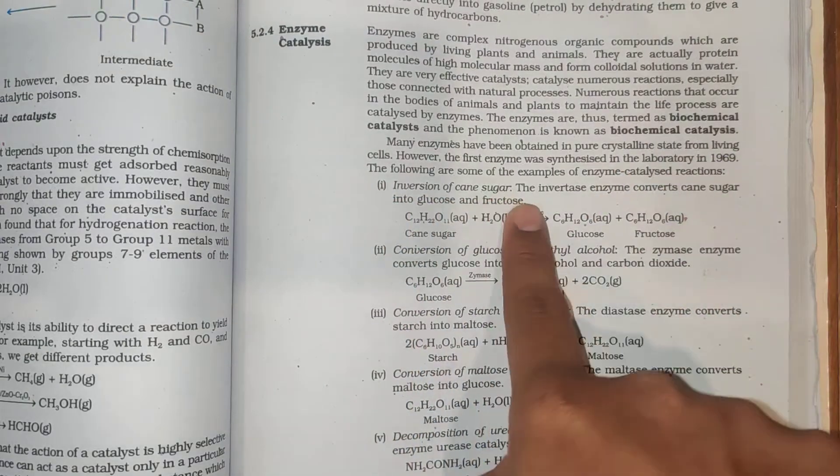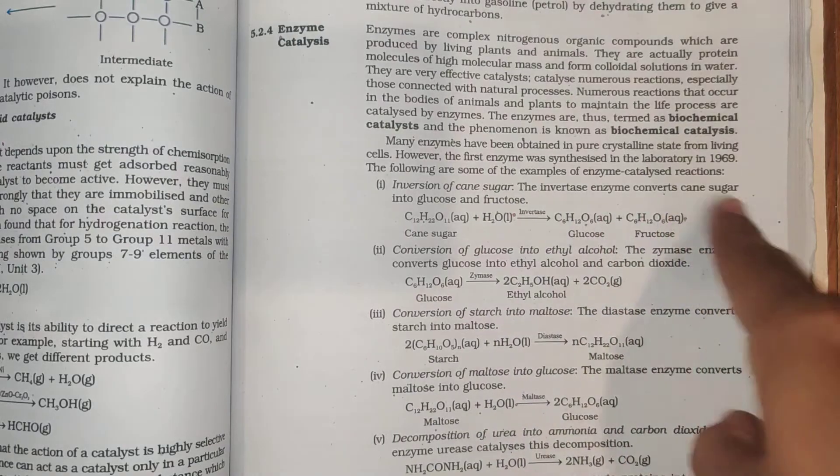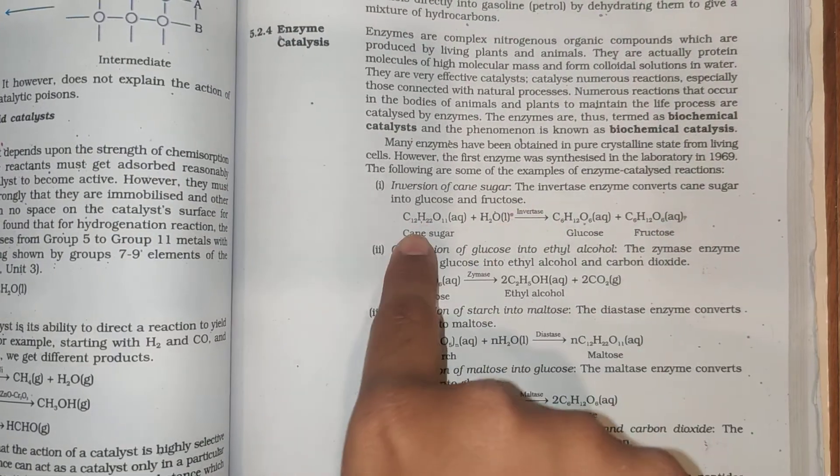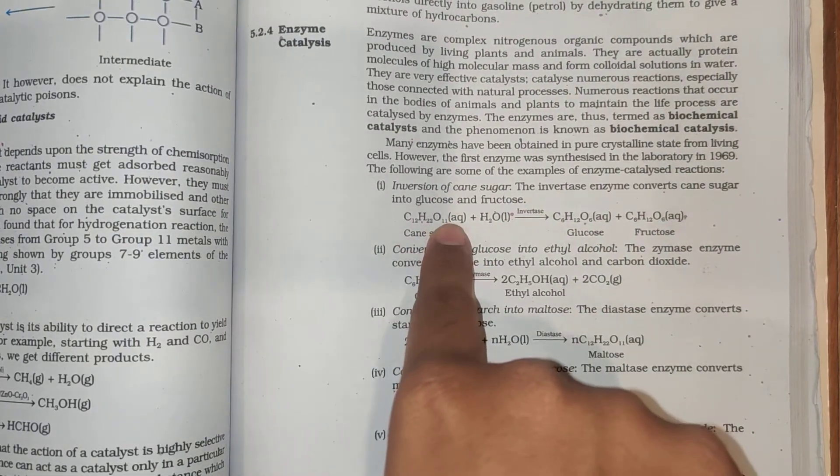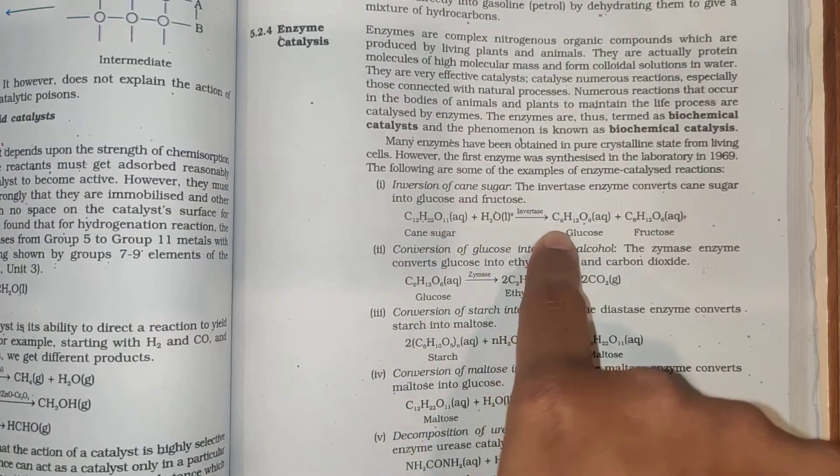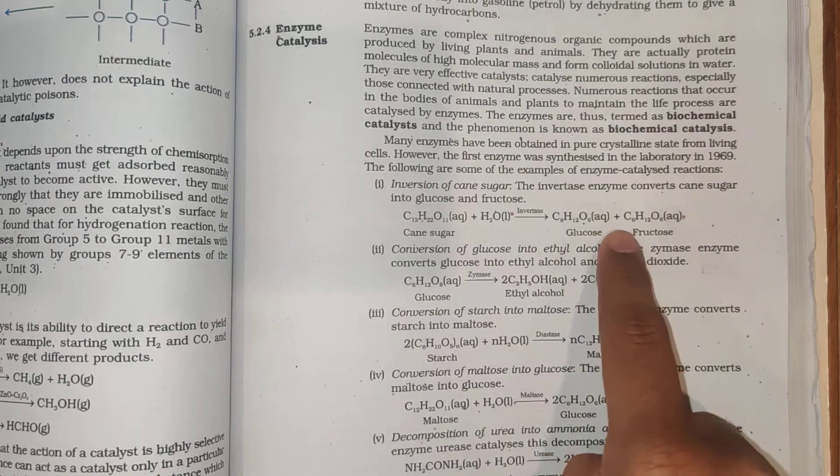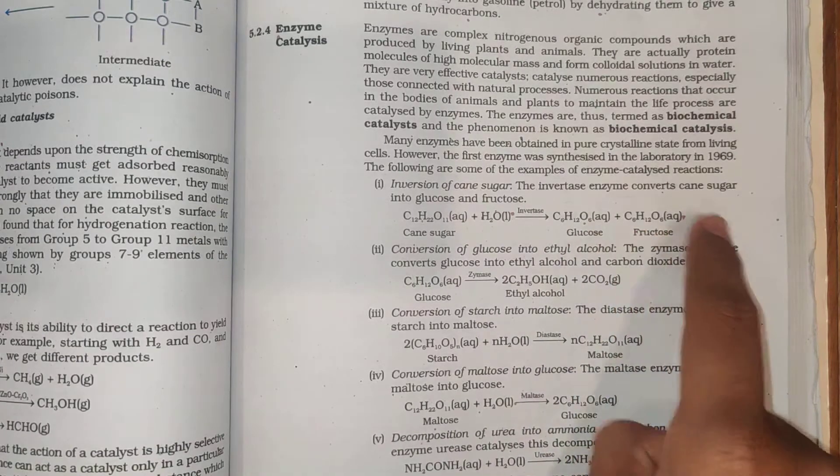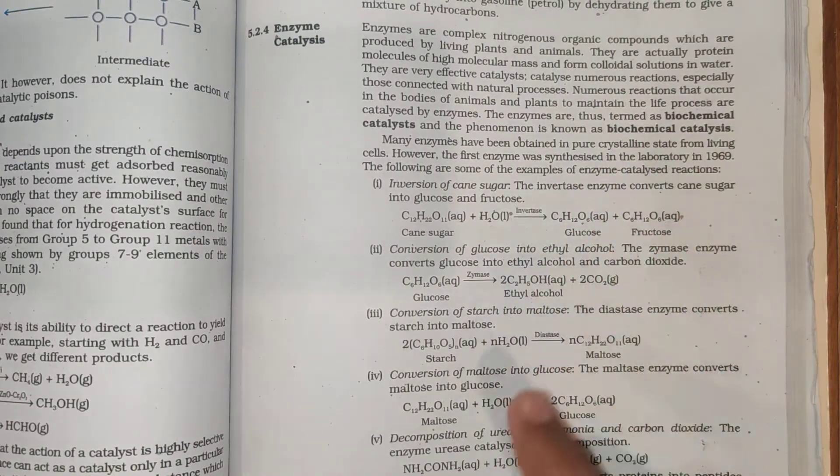Inversion of cane sugar: The invertase enzyme converts cane sugar into glucose and fructose. C12H22O11 (aqueous) plus H2O (liquid) in presence of invertase forms C6H12O6 (aqueous) plus C6H12O6 (aqueous), glucose and fructose.